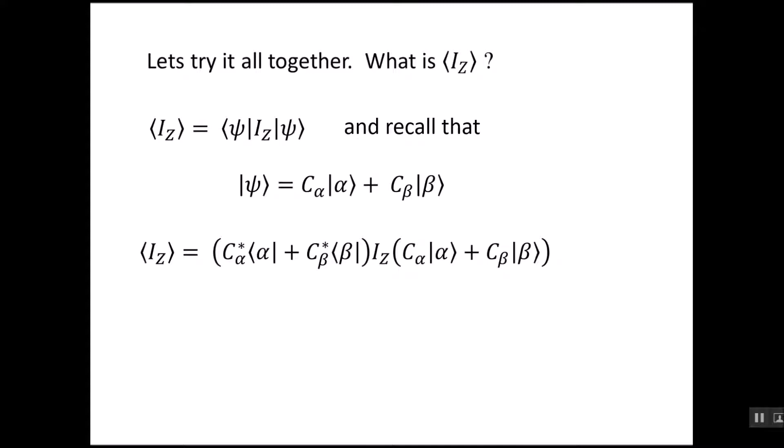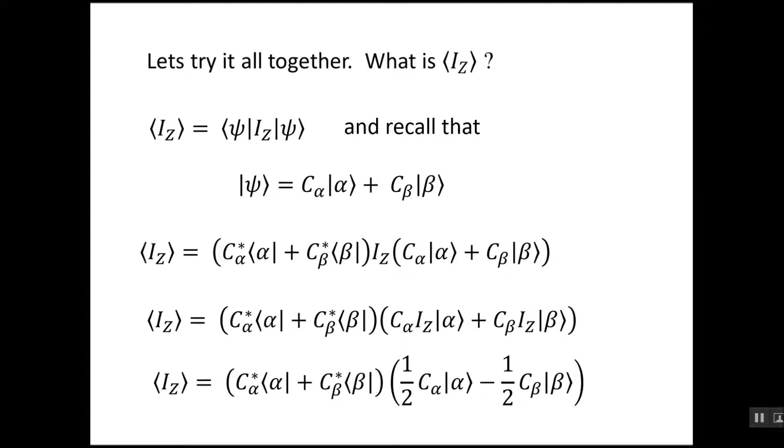If we take the IZ operator and apply it to the things on its right, we get this term. The IZ only applies to alpha. The C alpha is a constant term, so an operator on a constant does nothing. We just take that out. And likewise for IZ on beta, the beta term comes out. We only operate on beta. And we just saw on the prior slide what IZ on alpha was and what IZ on beta was. So we can write those out.